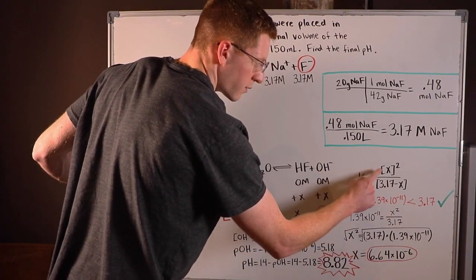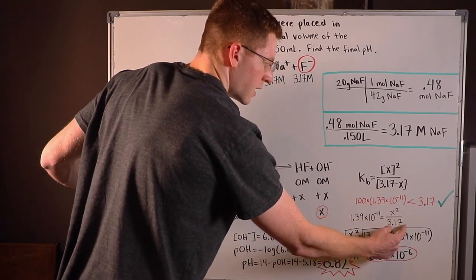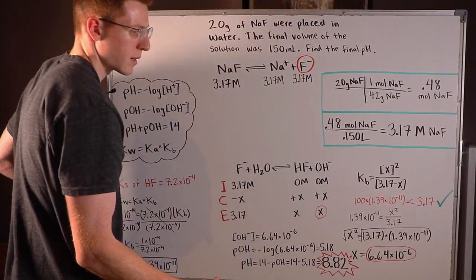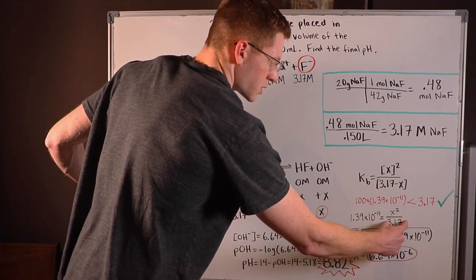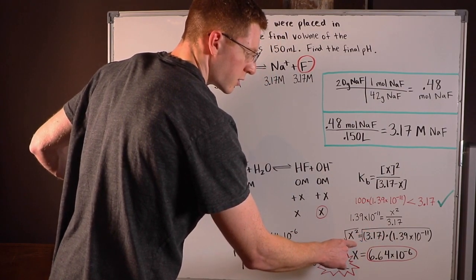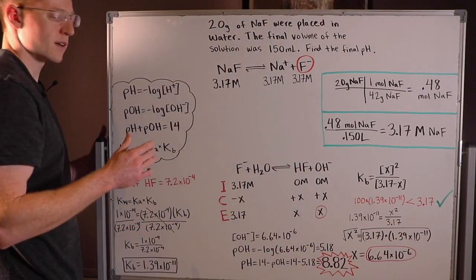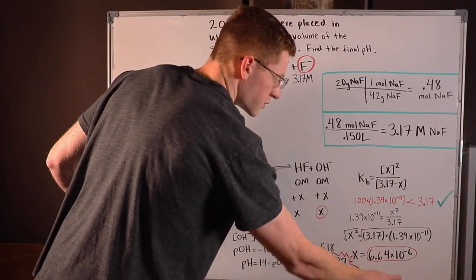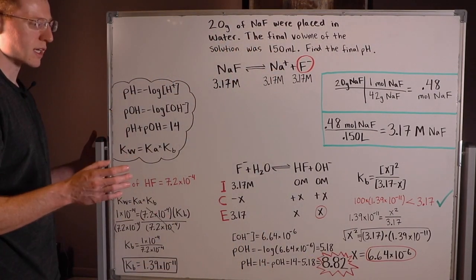It used to be x² over 3.17 - x. Now it's x² over 3.17. So then what I did is I multiplied both sides by 3.17 and took the square root to isolate x, and I found that x was 6.64 × 10⁻⁶.